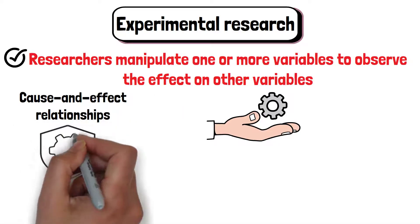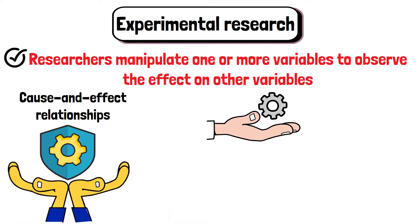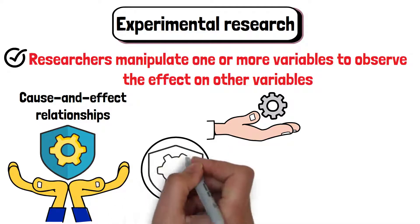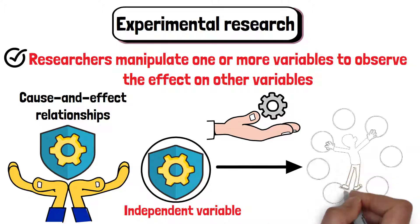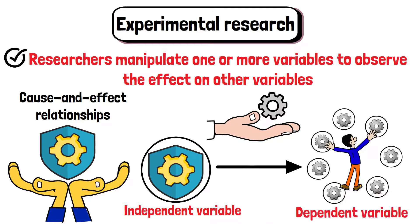By testing a hypothesis in a controlled environment, researchers can systematically change the independent variable and observe how it influences the dependent variable. By controlling the environment and carefully manipulating variables,